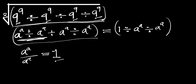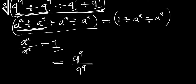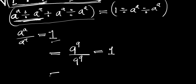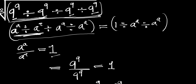That means we are going to concentrate on the first two terms. We have 9 to the power of 9 divided by 9 to the power of 9, and this will give us 1. So if we replace these first two terms by 1, that means we are going to have 1 divided by 9 to the power of 9, divided by 9 to the power of 9. So that is what we have reduced this to.